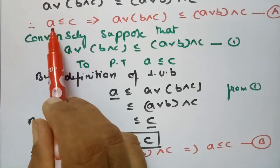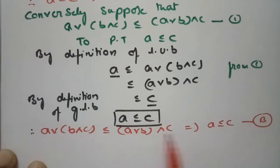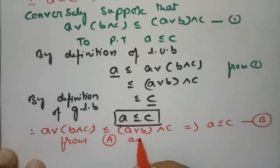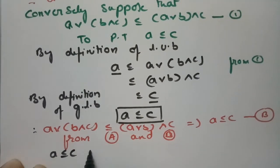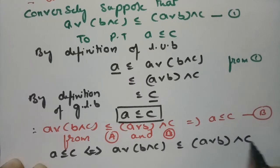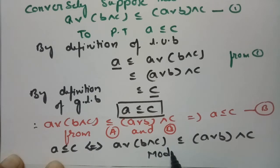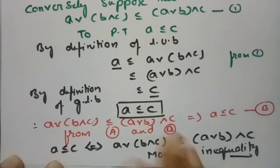From equations A and B we can conclude the double implication: A ≤ C if and only if A∨(B∧C) ≤ (A∨B)∧C. This is nothing but modular inequality.